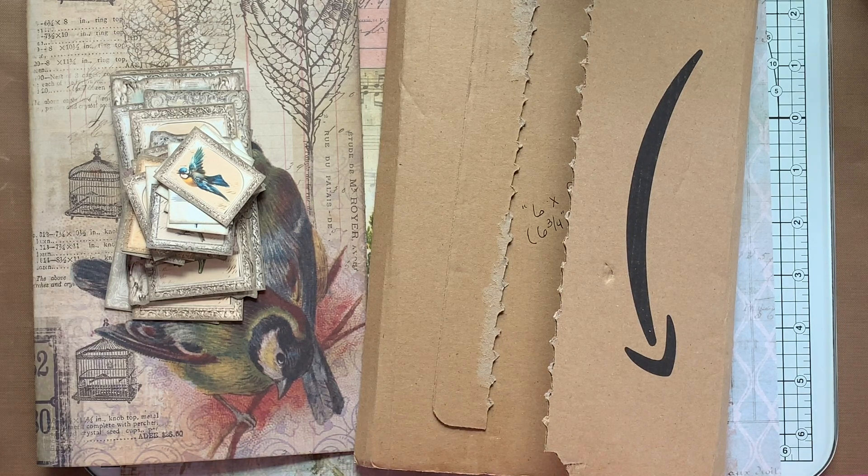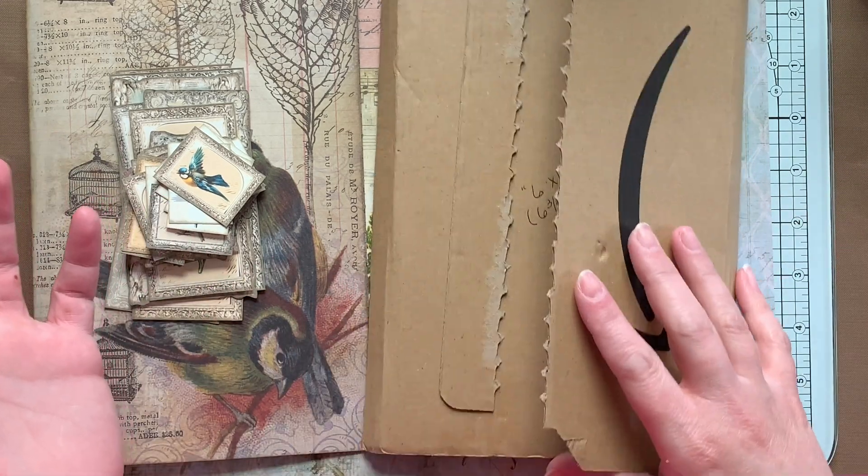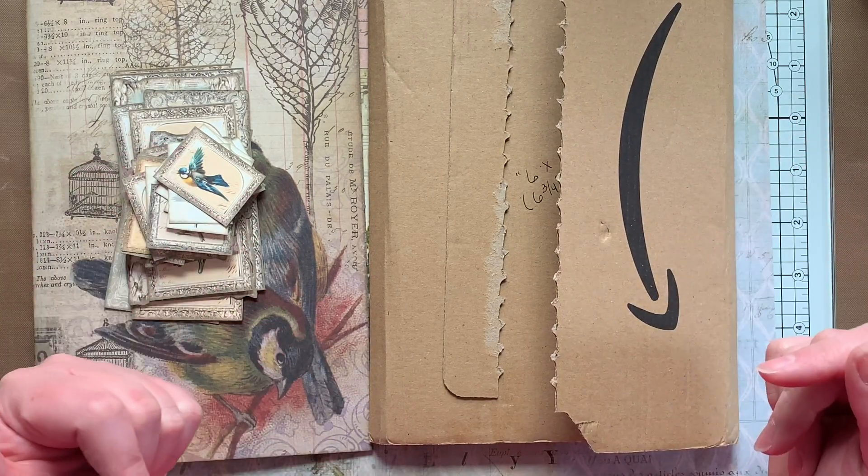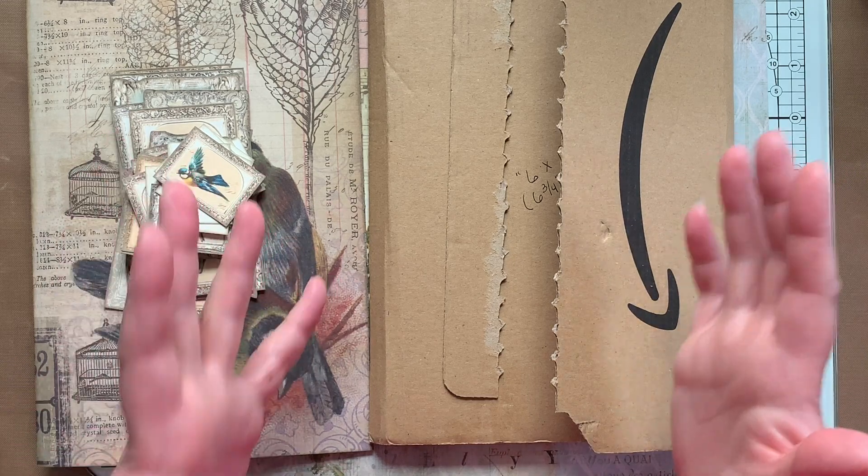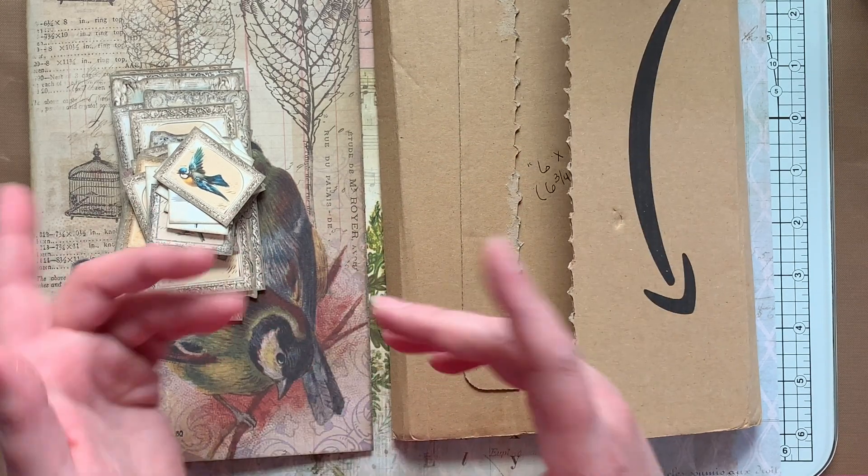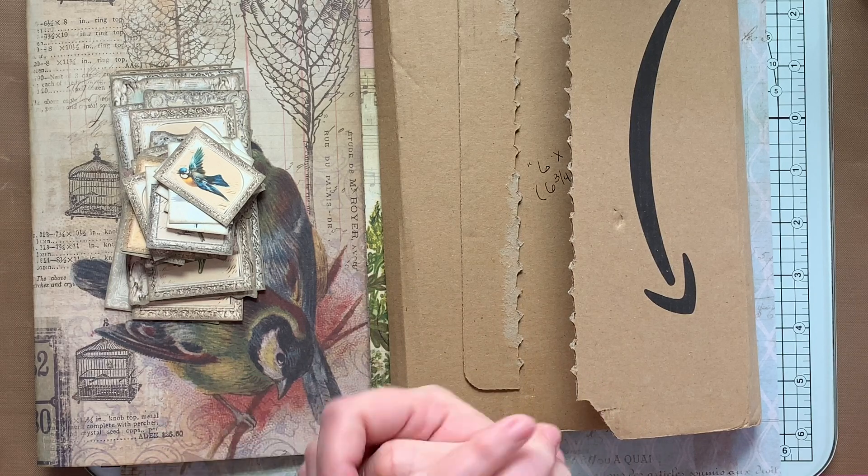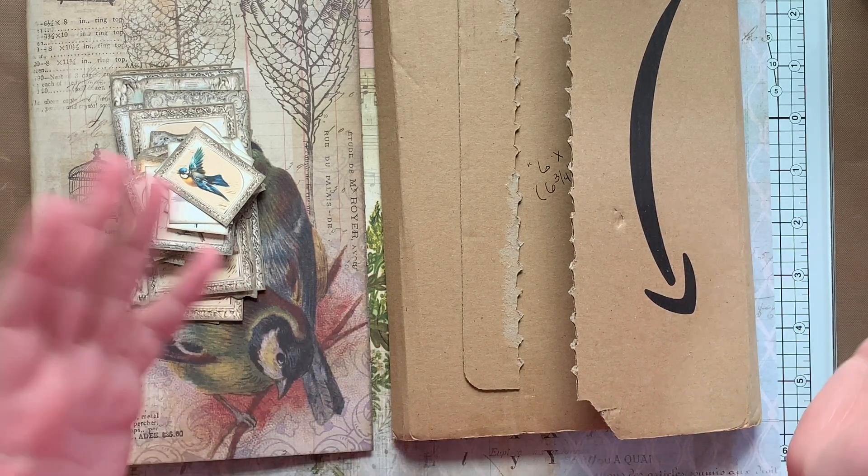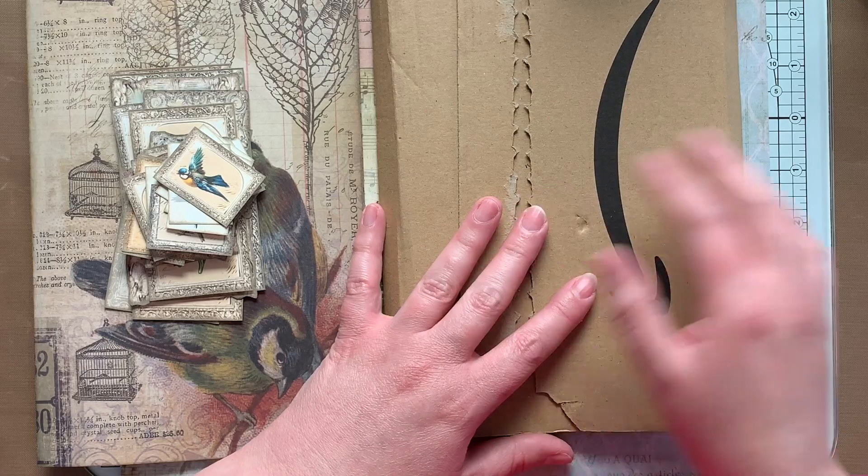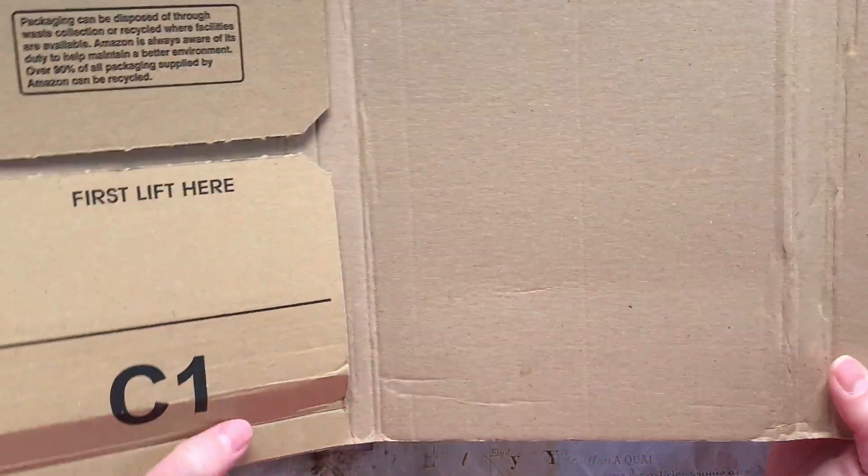What I am making is a portfolio slash journal. I don't know yet what to call it. I can't remember—the idea came from Tracy Fox at Love Junk Journals. She's Tracy Fox, Love Junk Journals on YouTube, and then she's Love Junk Journals on Etsy. About a year ago, probably now, maybe a little more than a year ago, she did a series where she took Amazon packaging and turned it into the most beautiful thing ever.